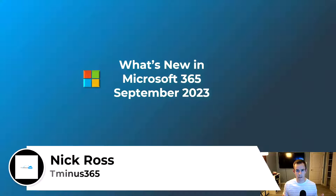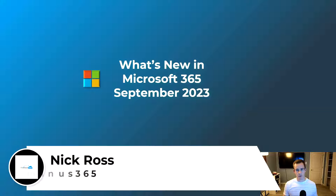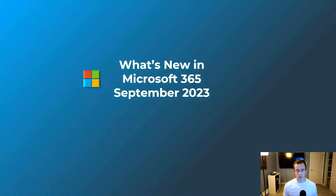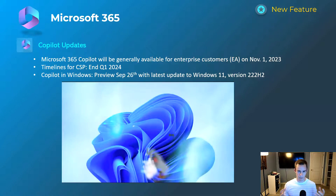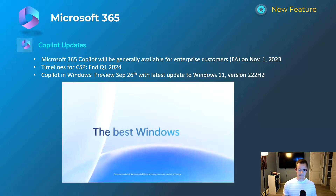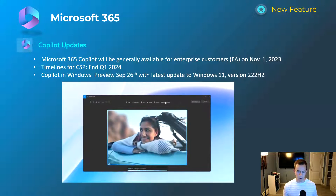Hey guys, it's Nick. Welcome to another episode of T-Minus 365. Today's episode covers the updates from September 2023 from Microsoft. If you've followed my update videos in the past, I focus on what's going on in the MSP space, blocking out the noise from the hundred or so announcements that come from Microsoft each month. I always supplement this video with a blog post with more information including helpful tutorials, so be sure to check that out. The first announcement is something we're all very excited about — there's a lot of hype around Copilot, and these announcements relate to recent updates as well as some GA timelines.